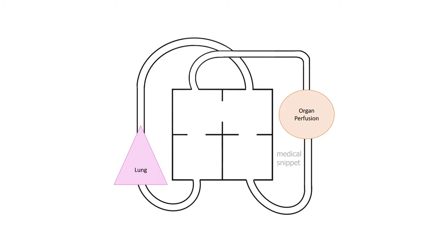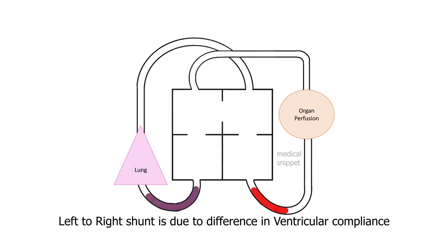Let's see the pathophysiology of atrial septal defect. One can see the defect in the interatrial septum. Usually there is left to right shunt across the atrial septal defect. The left to right shunt is not due to the difference in atrial pressures, but is due to the difference in ventricular compliance.